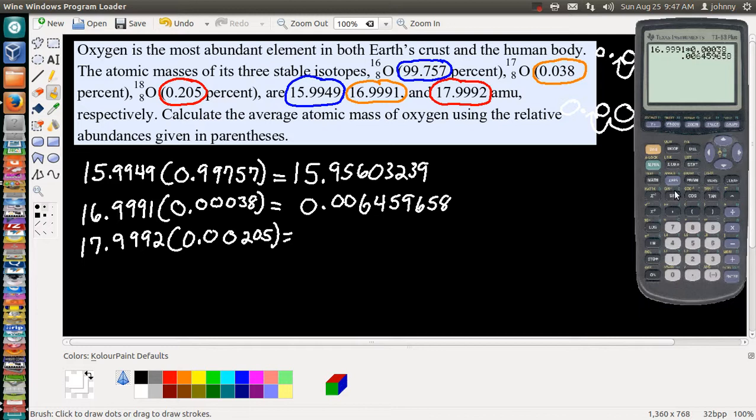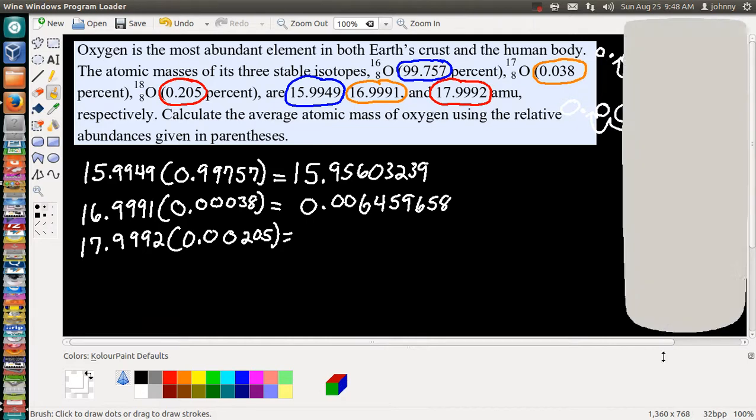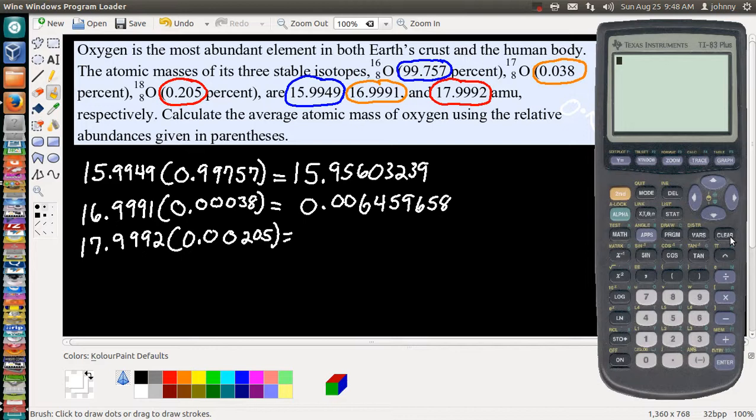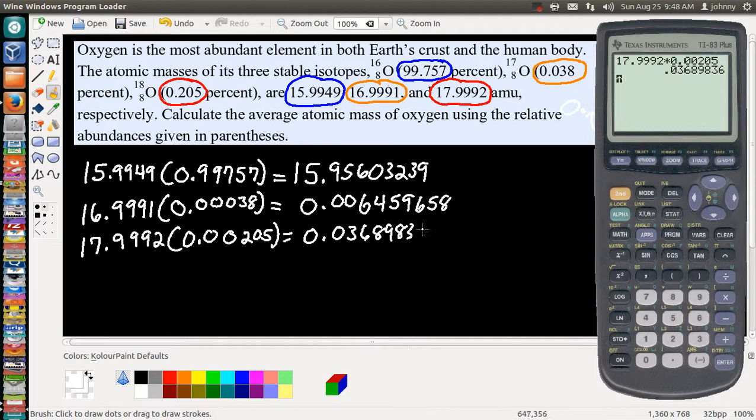And the last one down here, we've got 17.9992 times 0.00205. Make sure you got everything right, 17.9992 times 0.00205, we're good. Press Enter. When you write this number down, 0.03689836.